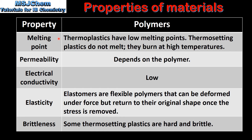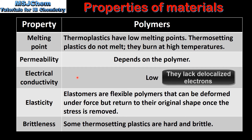Next we look at polymers. Thermoplastics have low melting points. Thermosetting plastics do not melt — instead they burn at high temperatures. The permeability of polymers depends on the polymer. Polymers have low electrical conductivity. Elastomers are flexible polymers that can be deformed under force but return to their original shape once the stress is removed. And some thermosetting plastics are hard and brittle.